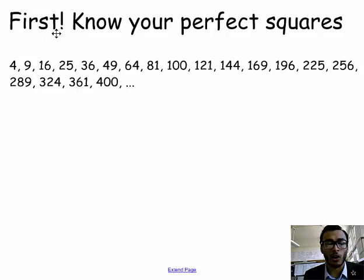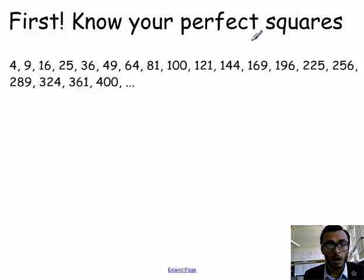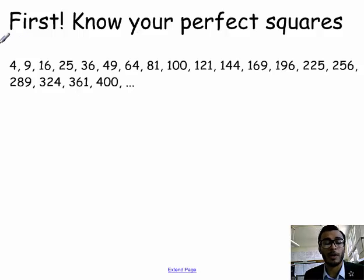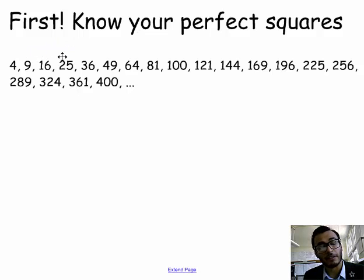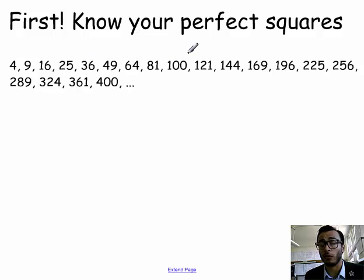Perfect squares are 4, 9, 16, 25, 36, and so on and so forth. If you ever forget your perfect squares, you can always derive them by going through each number and multiplying it by itself. For example, 2 times 2 is 4, 3 times 3 is 9, 4 times 4 is 16, 5 times 5 is 25, 6 times 6, 7 times 7, and so on. So you've got to know your perfect squares.